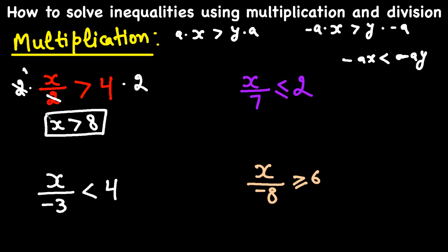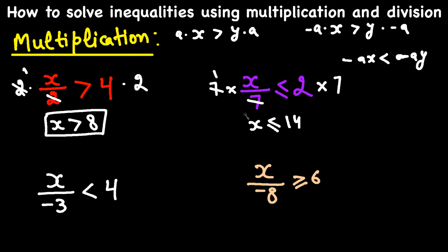In this one we have X over 7 on the left-hand side, so I need to multiply both sides by 7 to isolate X. 7 times 1 is 7, so we get X on the left-hand side less than or equal to 14. We've solved the inequality.